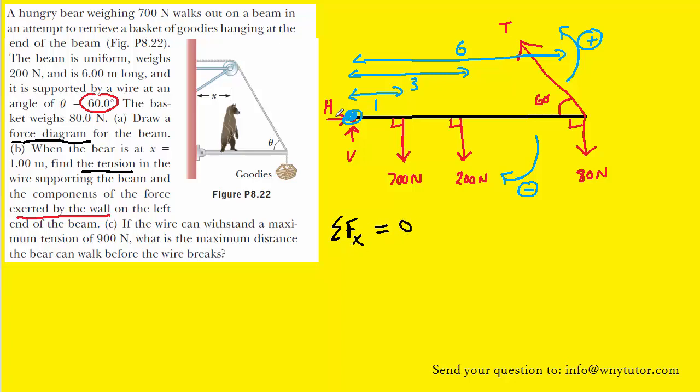So we're going to go ahead and plug in those forces. We only have a couple of forces in the horizontal direction. We have H, which is pointing to the right and is therefore positive, and then we have the x component of the tension. Recall that the tension can be broken up into components. You have an x component pointing to the left, and then a y component is pointing upward.